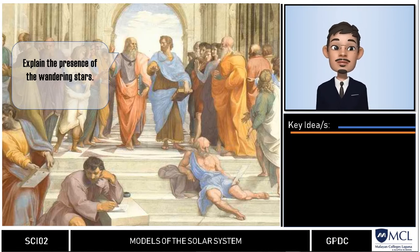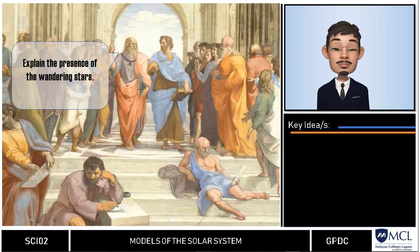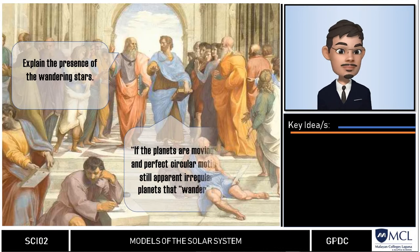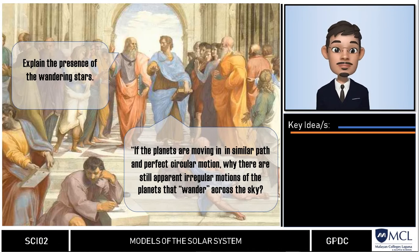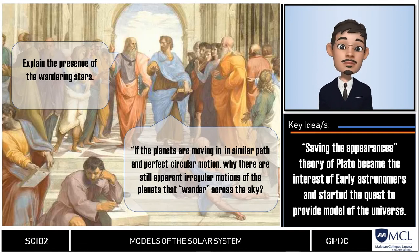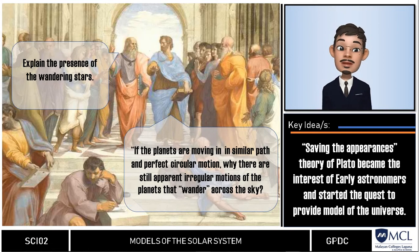His students challenged him: if the planets move in similar path in perfect circular motion, why are there still apparent irregular motions of planets that wander across the sky? This question became an instant goal of most Greek astronomers and philosophers that led to the formulation of different models of the universe.